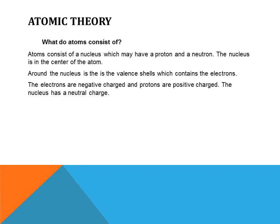What do atoms consist of? Atoms consist of a nucleus, which may have a proton and a neutron. The nucleus is in the center of the atom. Around the nucleus are the valence shells, which contain the electrons. The electrons flow around the nucleus and travel at very high speeds. The electrons are negatively charged and the protons are positively charged. The nucleus has a neutral charge.